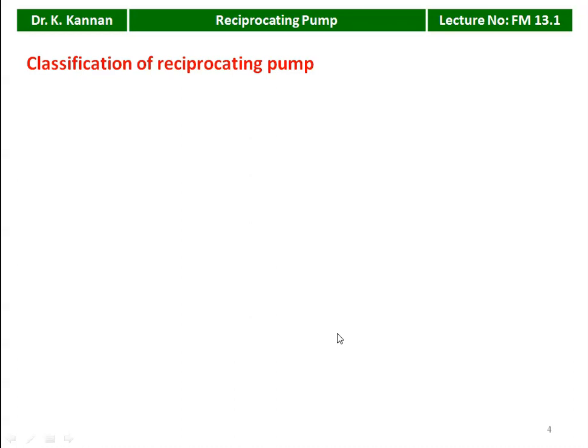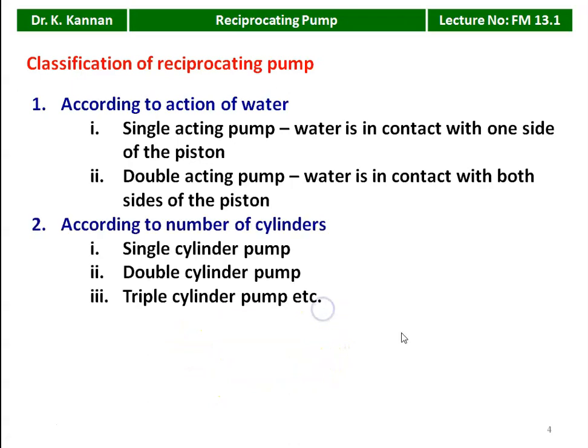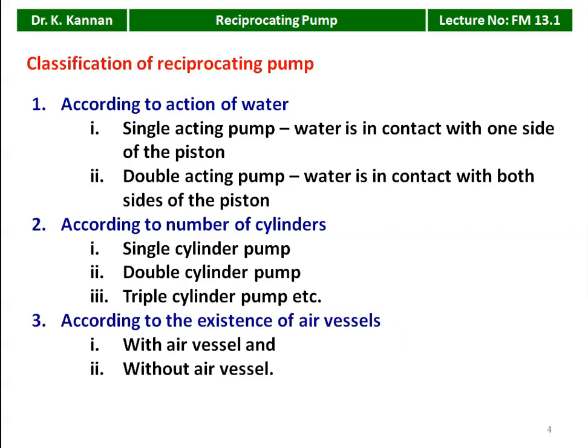The classification of the reciprocating pump: first, according to the suction of water — it may be a single acting pump (water in contact with one side of the piston) or a double acting pump (water in contact with both sides of the piston). Based on the number of cylinders, it may be single, double, or triple cylinder pump, depending on delivery quantity and pressure rise required. According to the existence of air vessels, the pump may be with or without an air vessel — preferably with an air vessel so there will be continuous delivery of liquid.